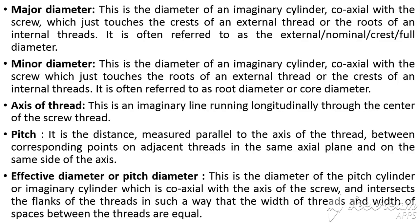The axis of thread is an imaginary line running longitudinally through the center of the screw thread. Pitch is defined as the distance measured in a direction parallel to the axis of the thread between corresponding points on adjacent threads. The effective or pitch diameter is the diameter of an imaginary cylinder coaxial with the axis of the screw that intersects the flanks of the threads in such a way that the width of the thread and the width of the space between the threads are equal.